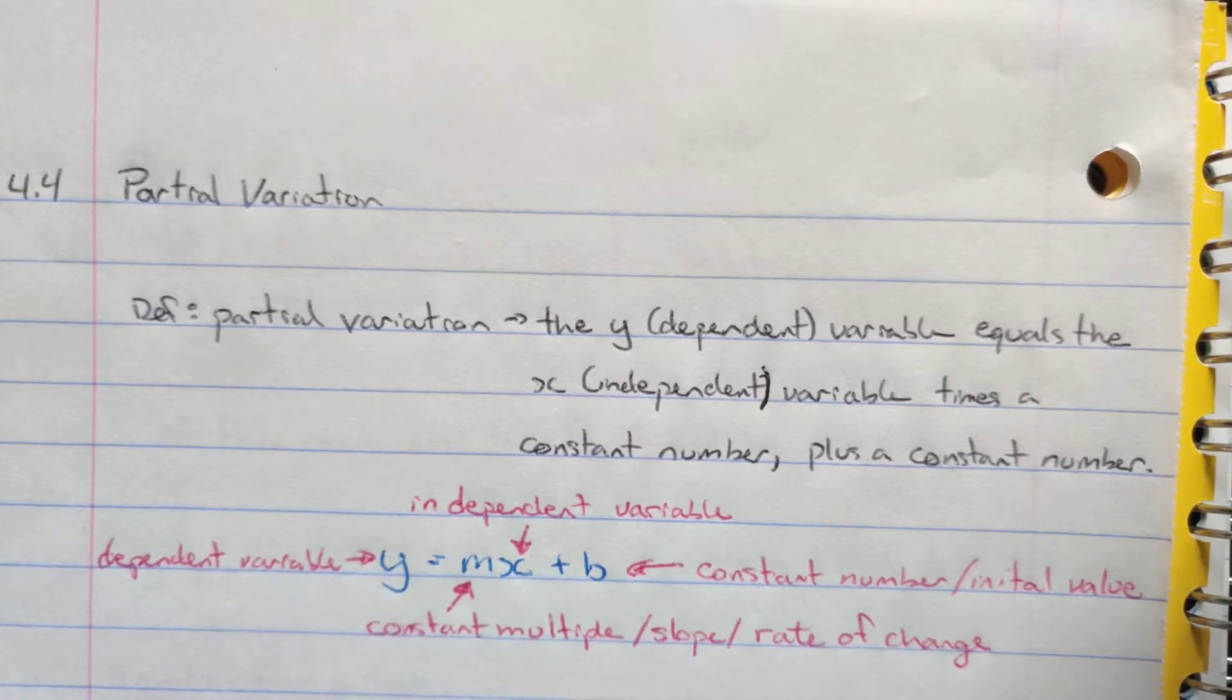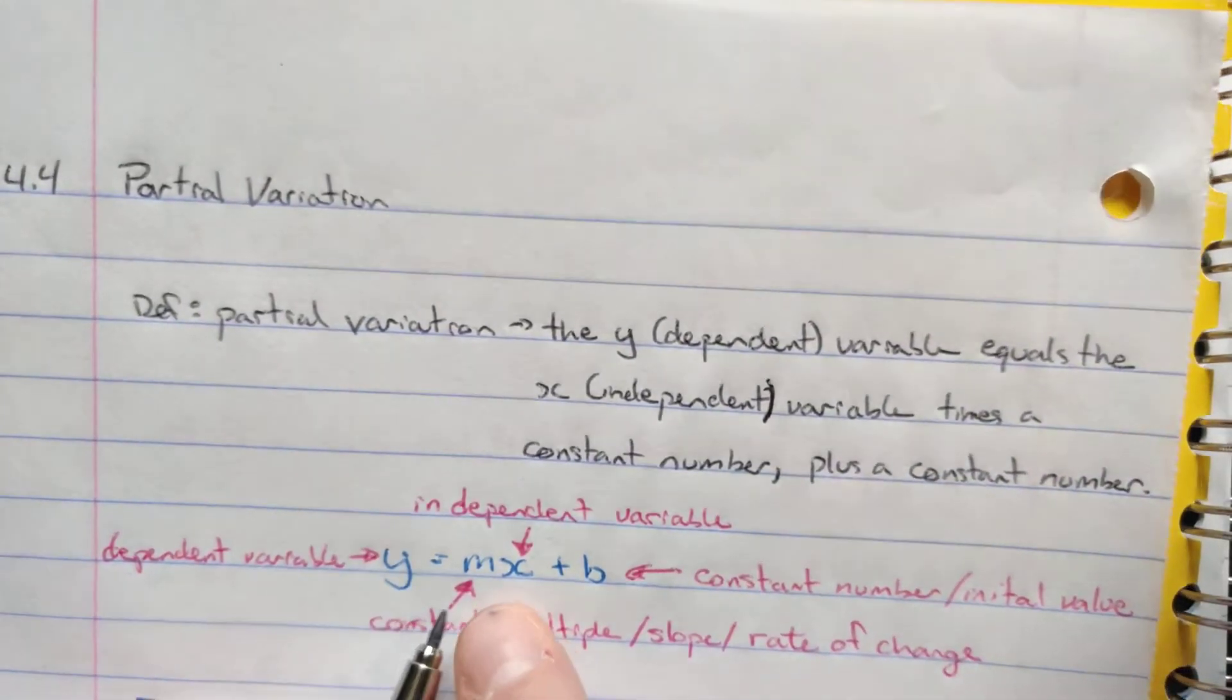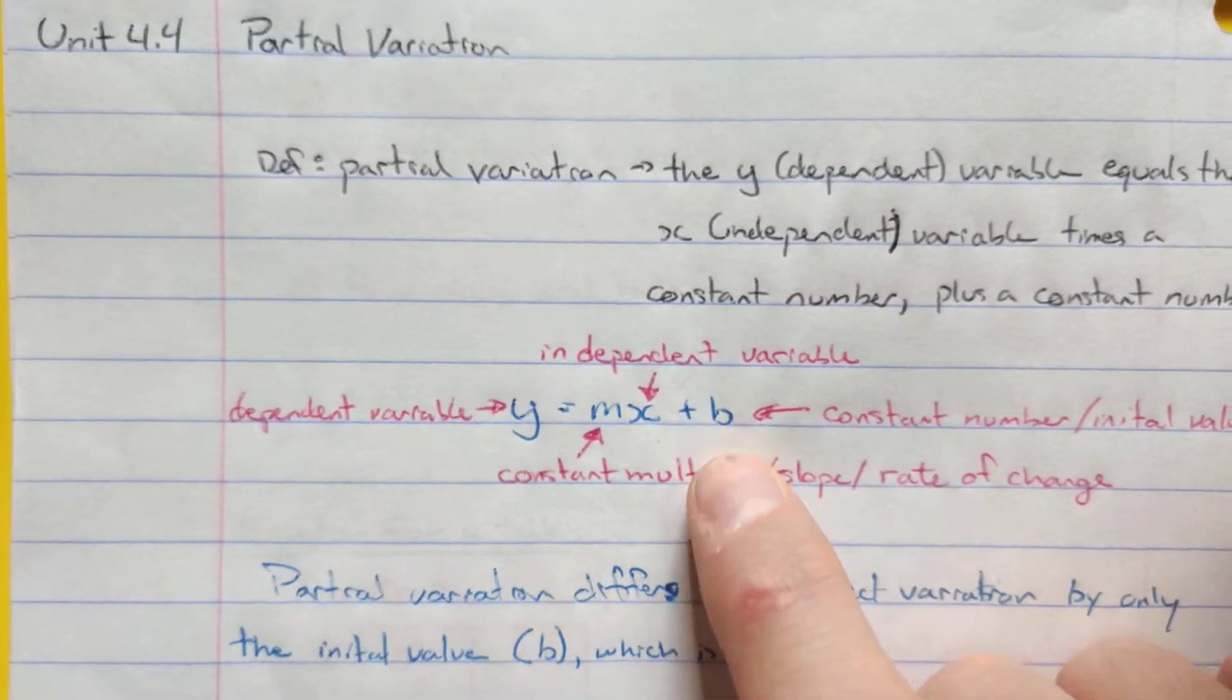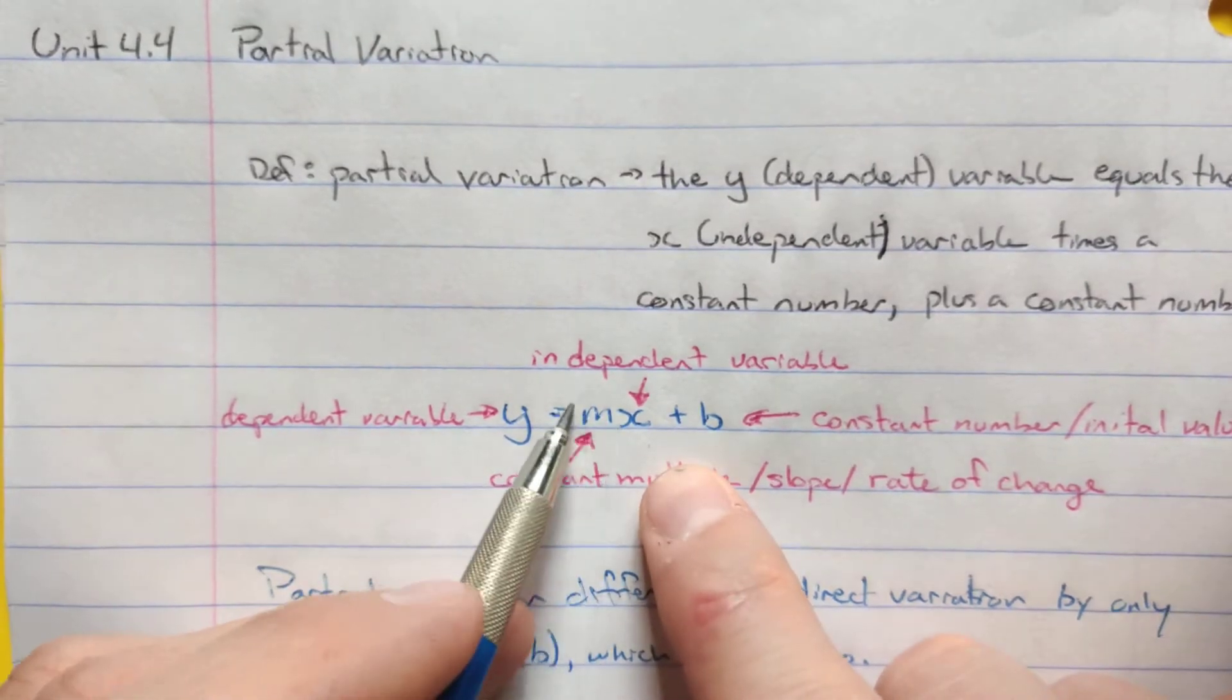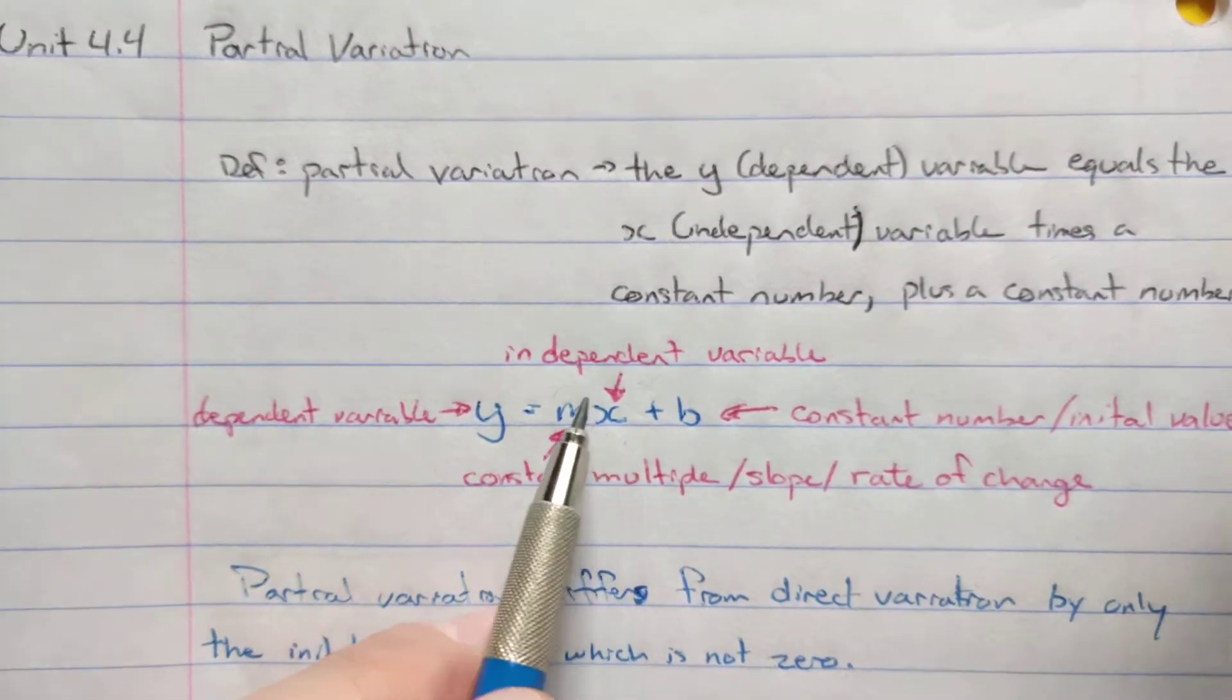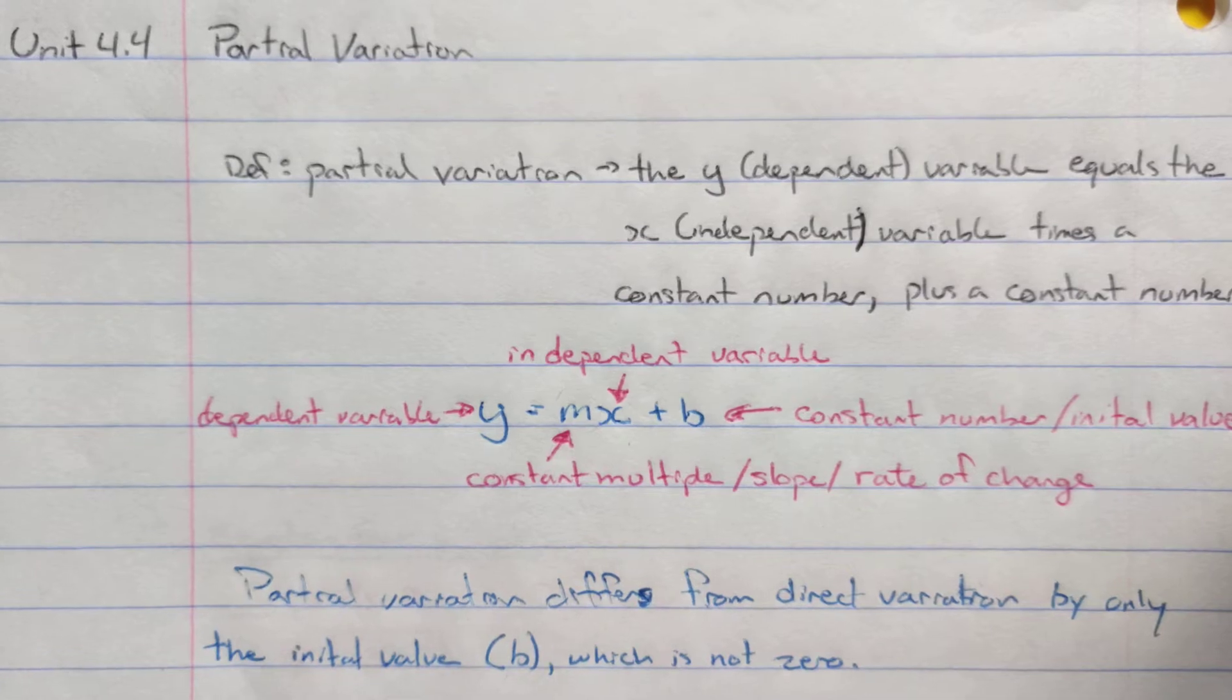So that's the same definition as direct variation, but then we also add a constant number. So if we take a look here, here's our new formula, y equals mx plus b. And again, your textbook likes to do things a little bit differently and call the m a k. It's in a different order in some of the examples. It's the b plus mx, but it doesn't matter which order you put them in.